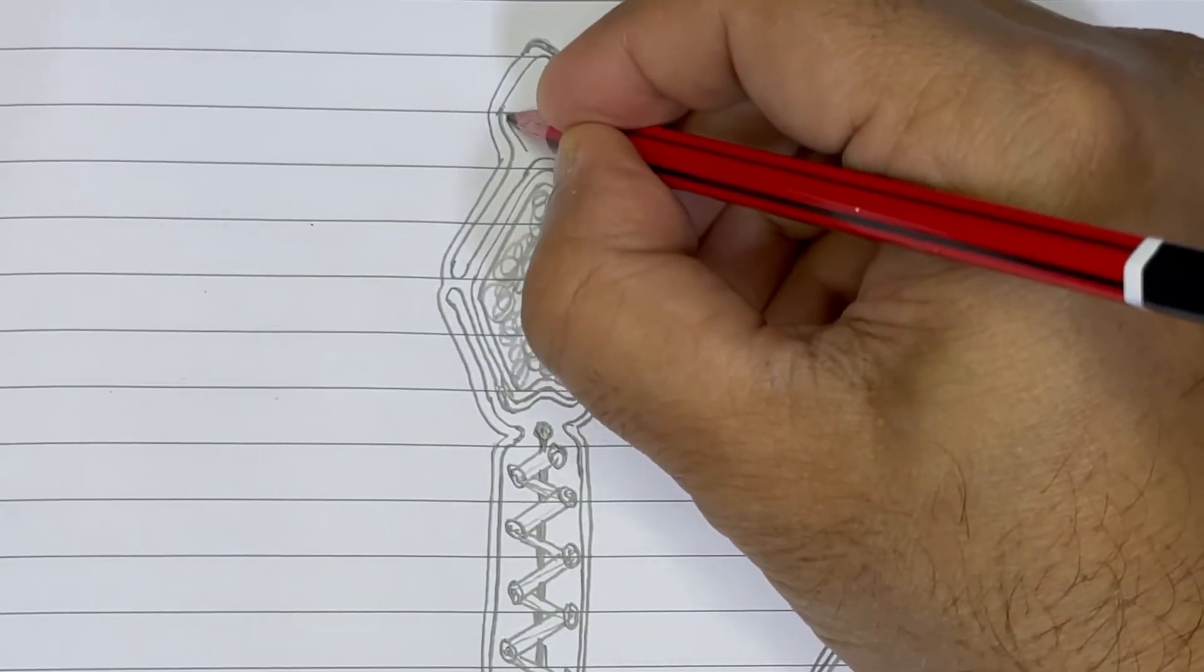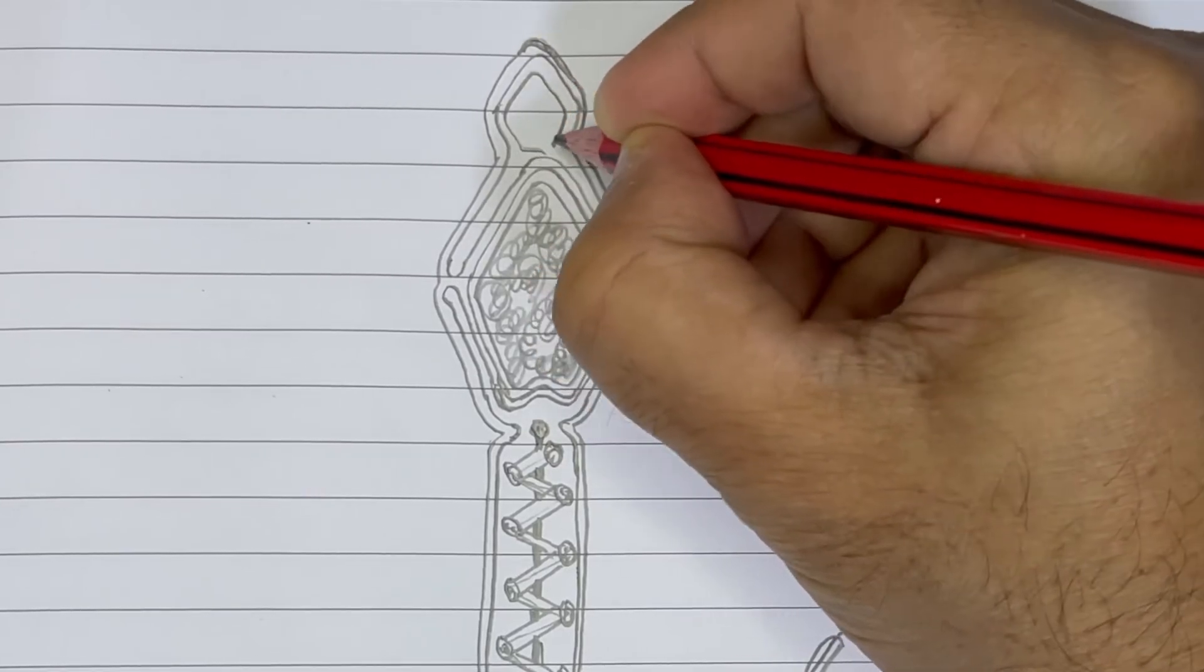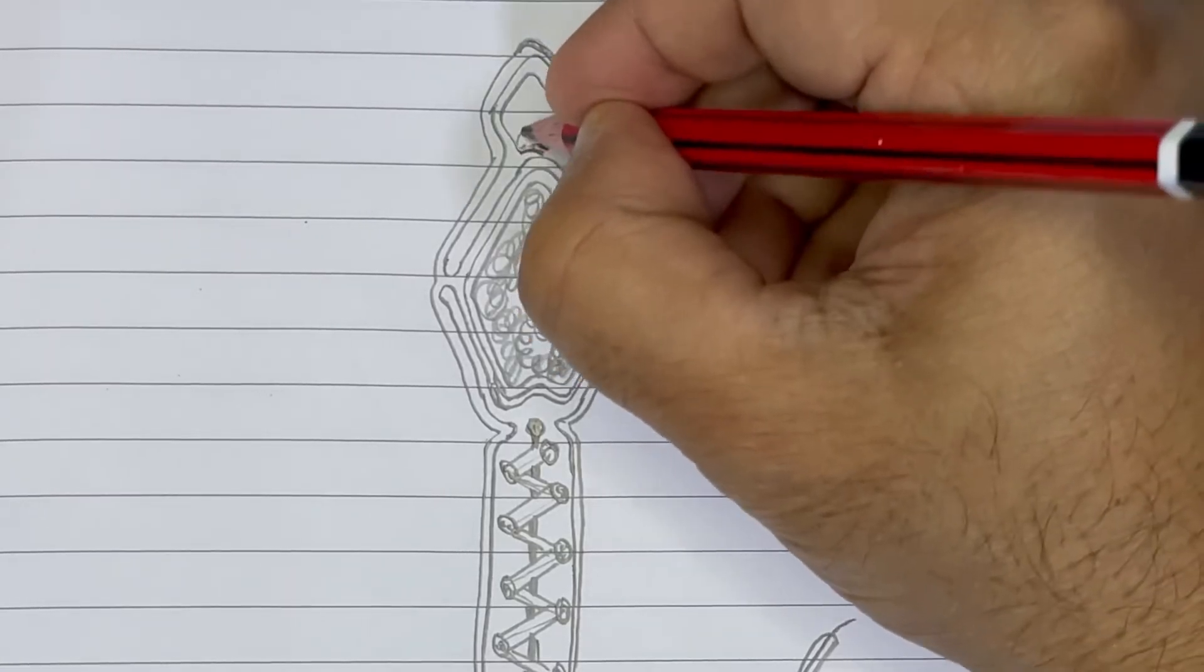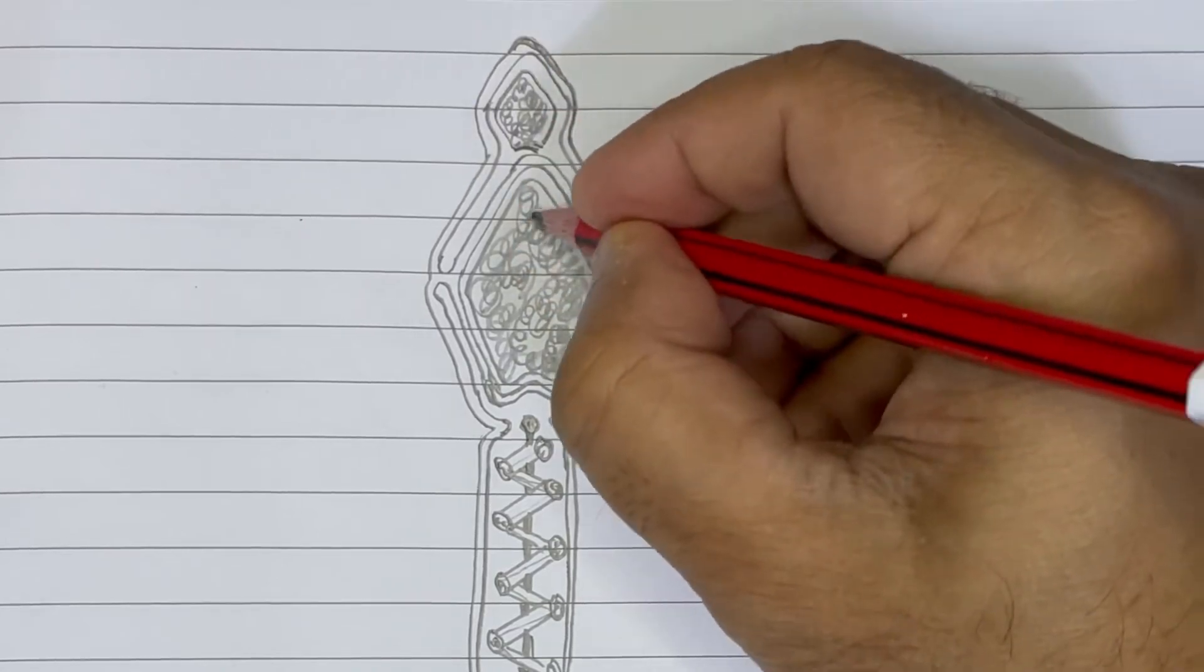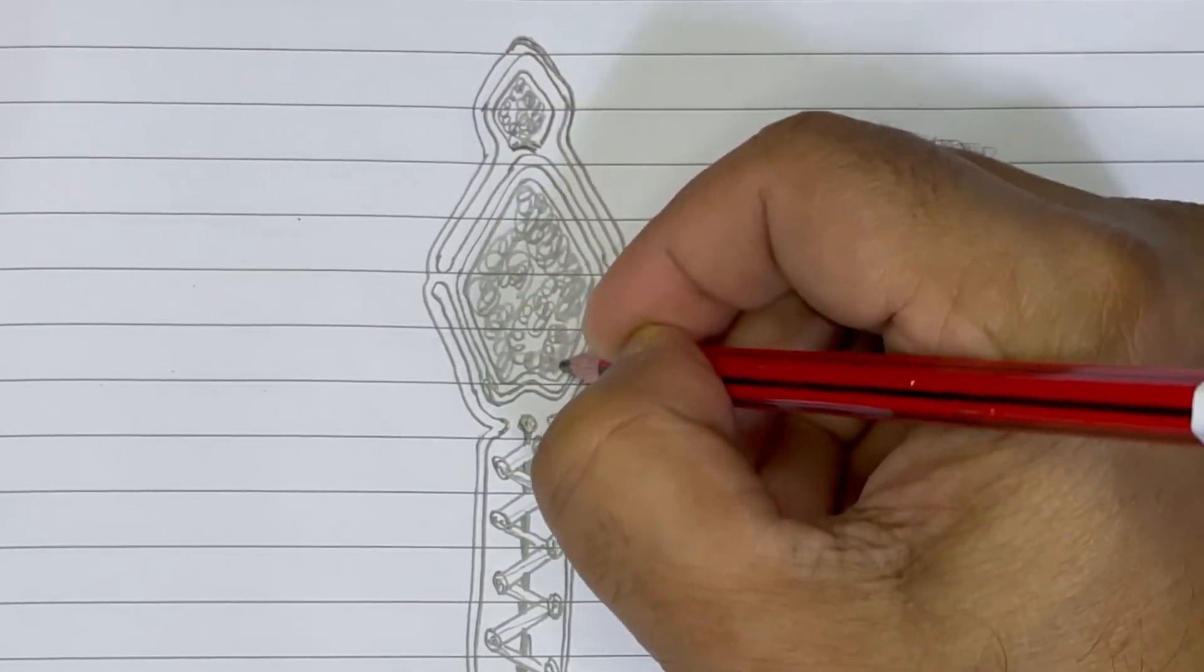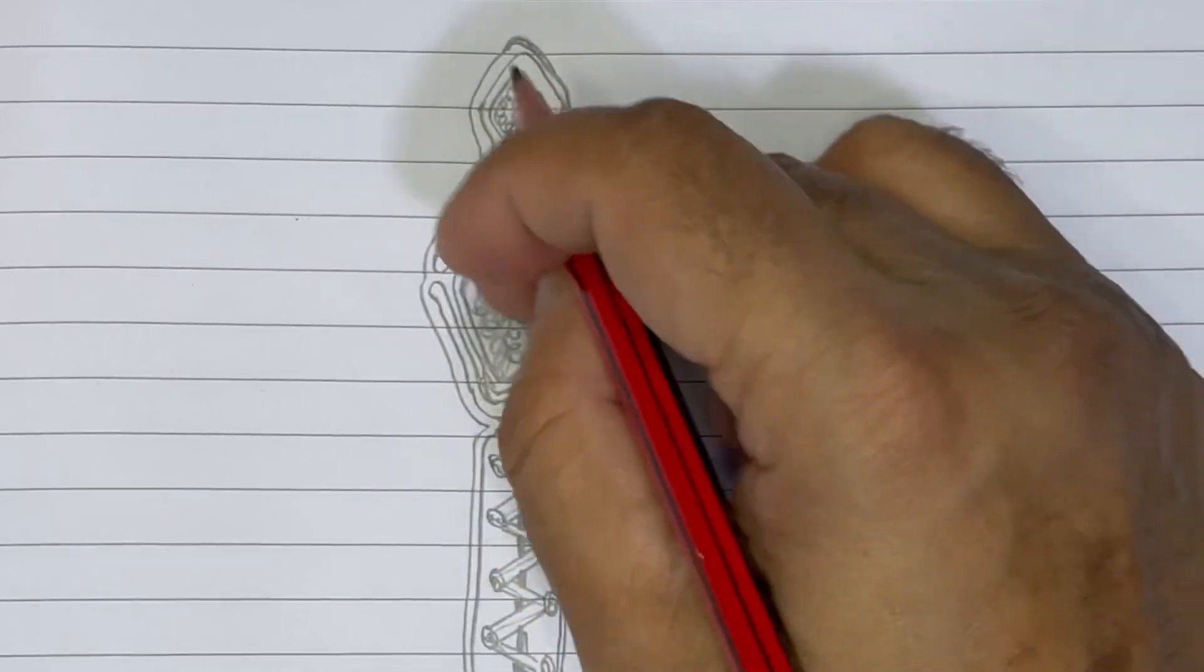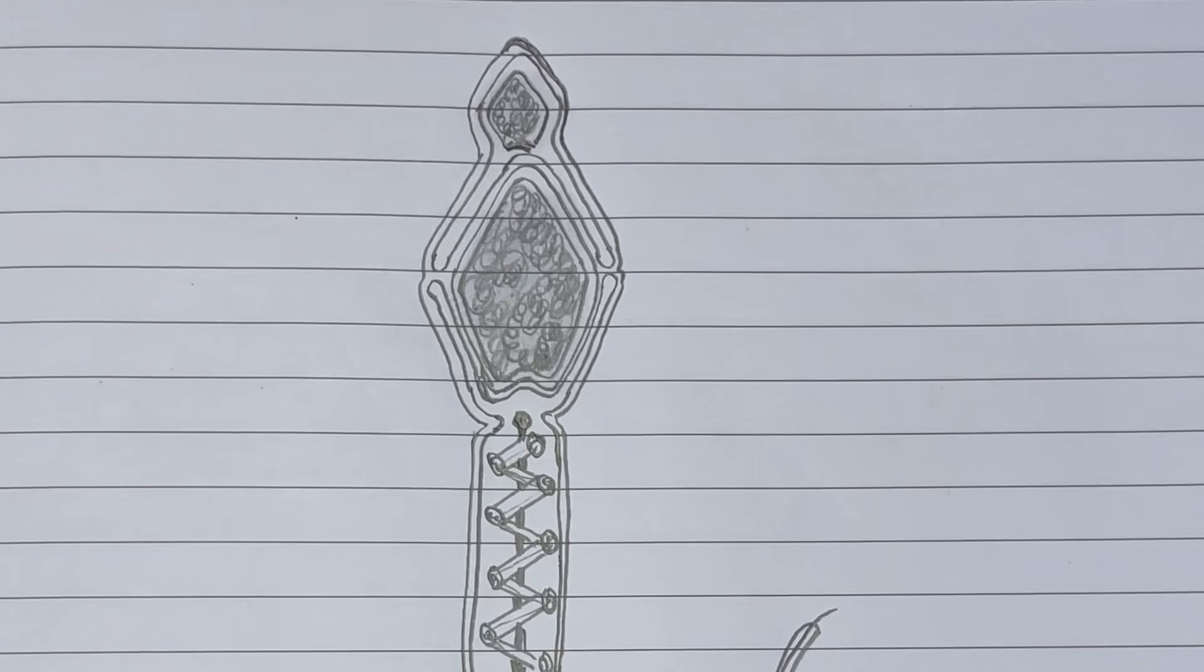In order to shade the nucleus, draw small spring-like structures inside this. By the way, the tip here also we need to make one small like that, and there also we need to put the springs and just spread it evenly all around.